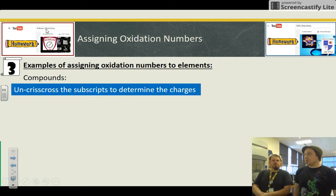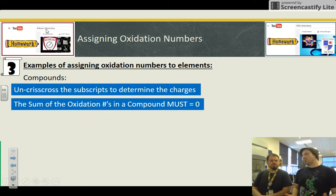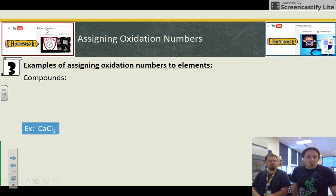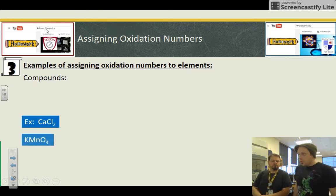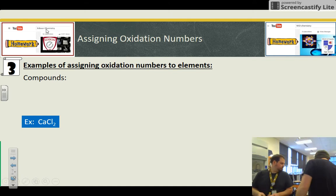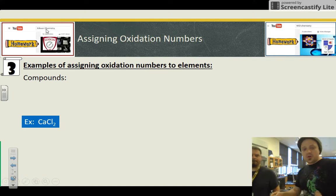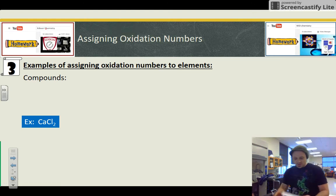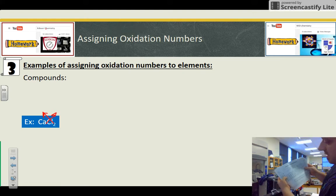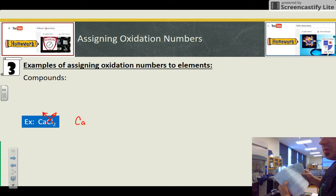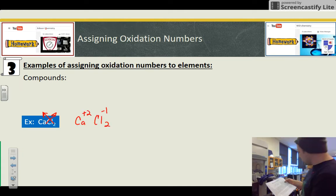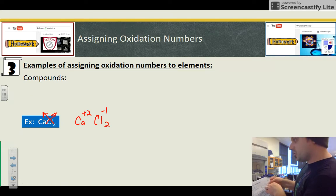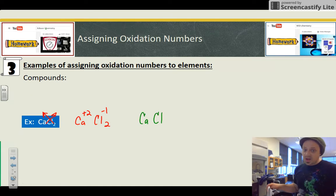Compounds are easy because you just uncross-cross the subscripts to turn the charges, or I call it the charge cancellation technique. And so for calcium chloride, what you basically do is you click out your periodic table and you start looking up the elements in the oxidation states that are presented. You have to find calcium. Calcium, it says it's a plus two. That's great.